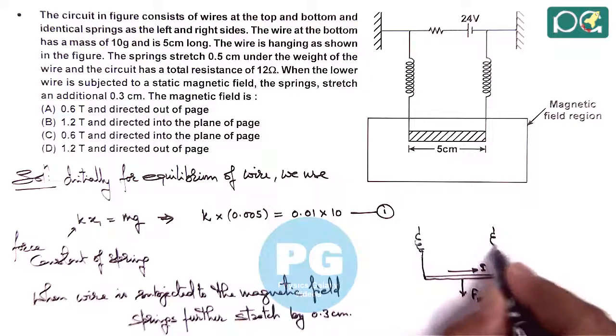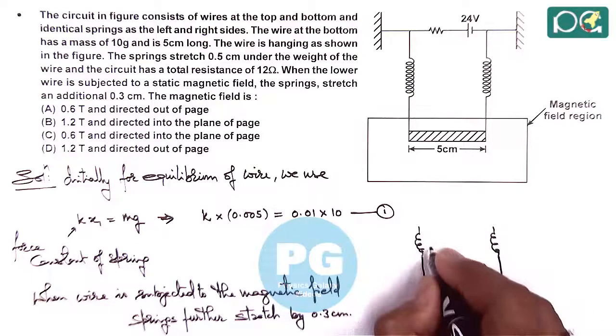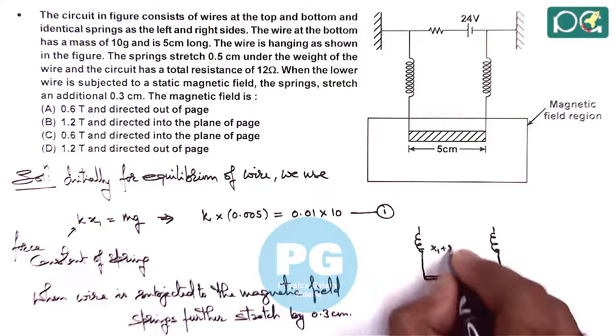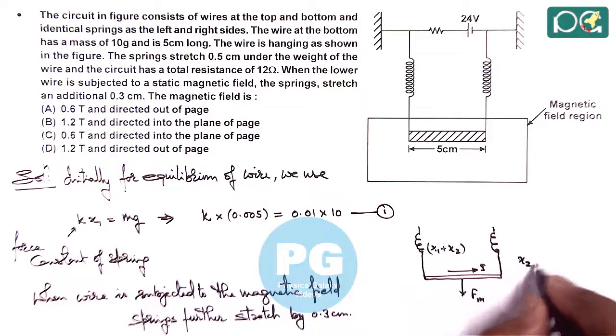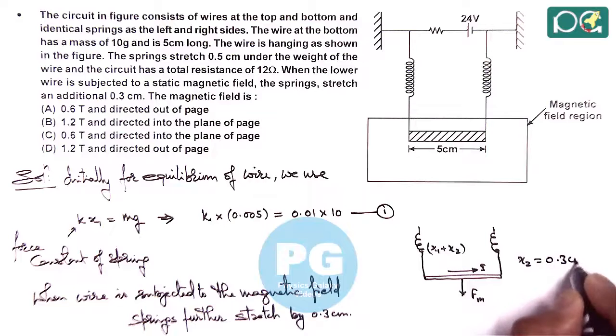Here we can say in this case when magnetic force is acting, the spring extension will be x₁ plus x₂, where x₂ equals 0.3 centimeters.